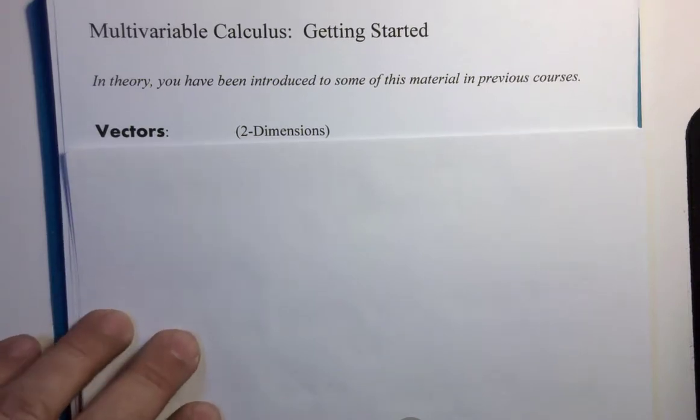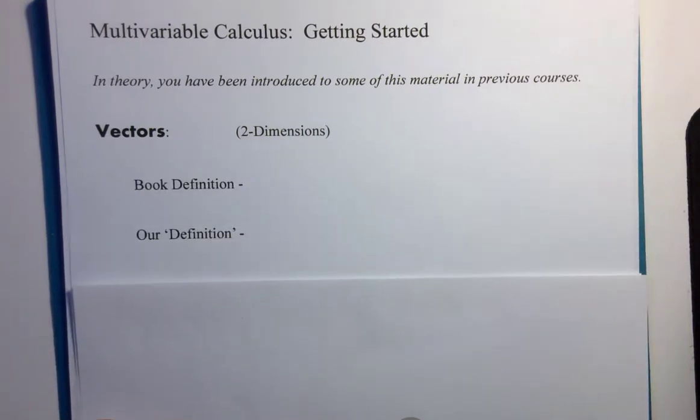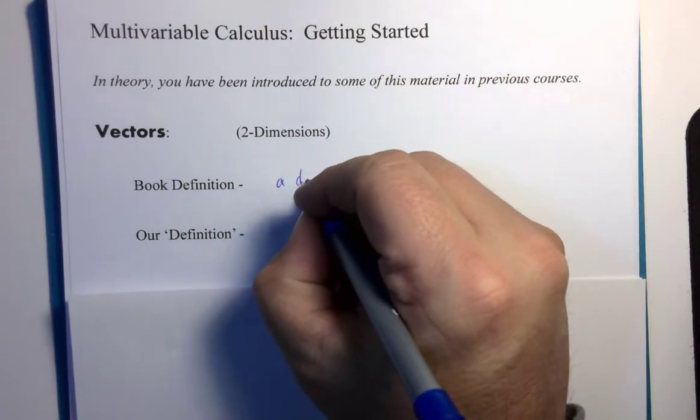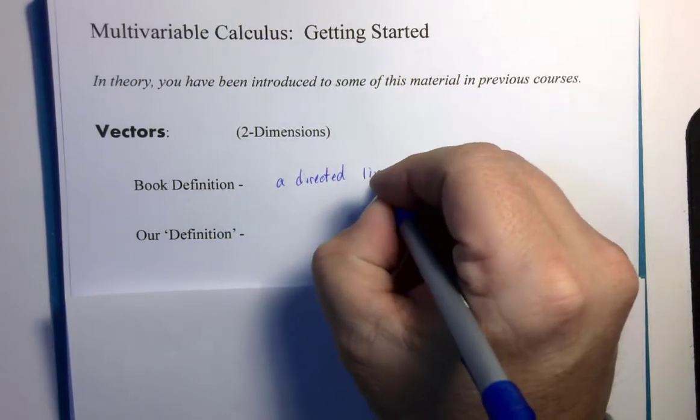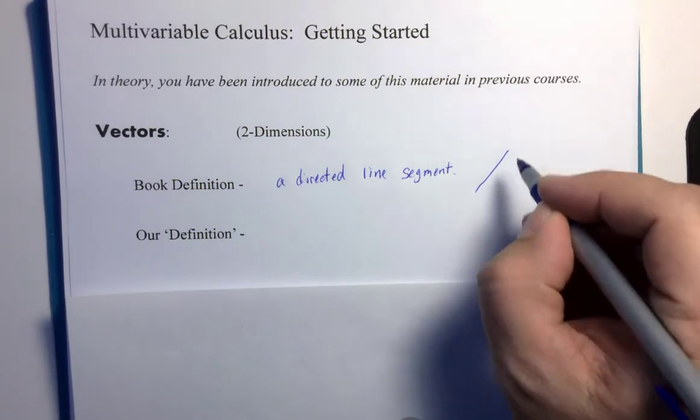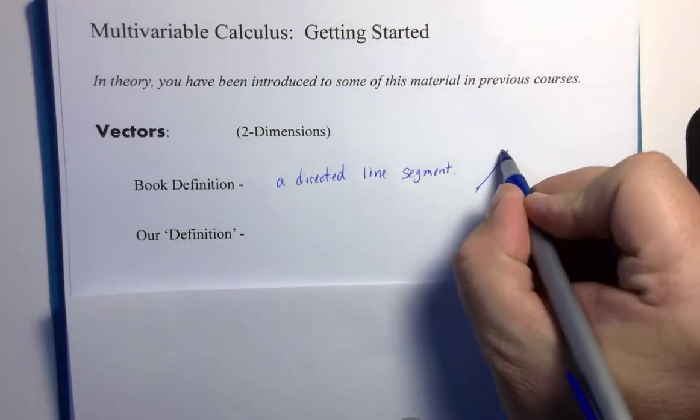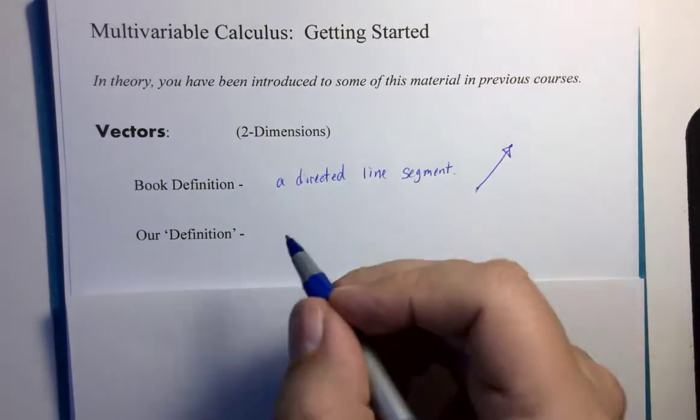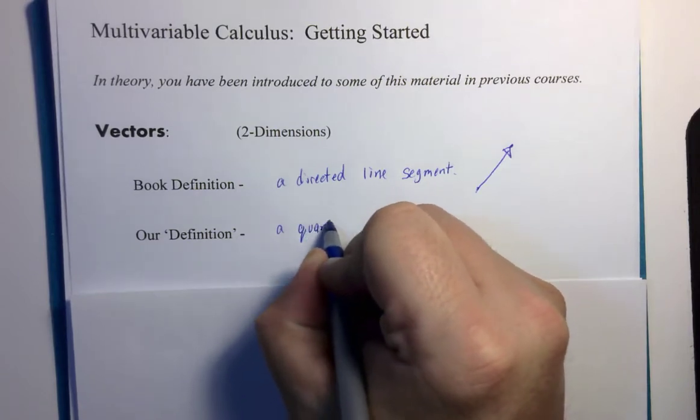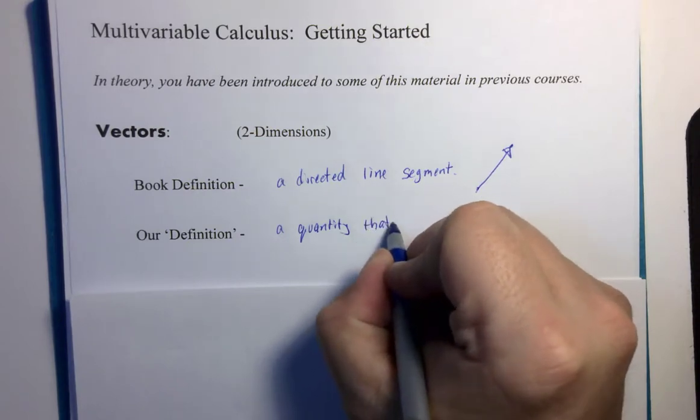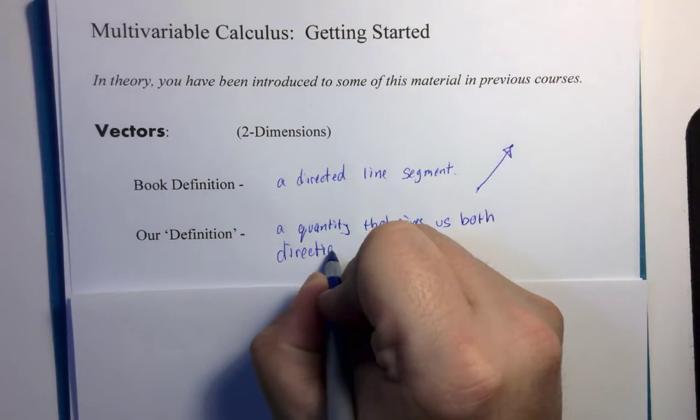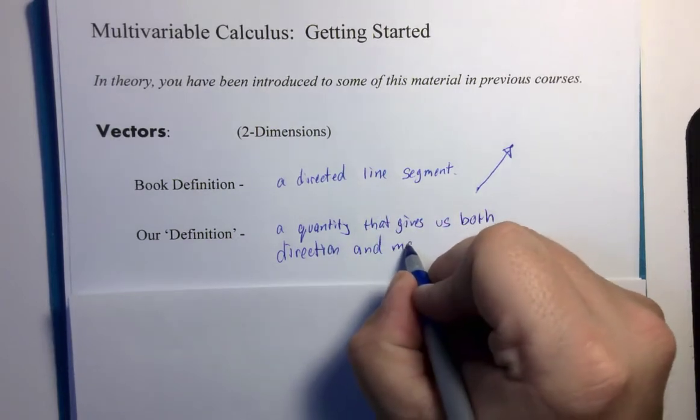So, starting off, let's have two definitions. The particular book I'm using right now would define a vector as a directed line segment. There's a segment because it has a beginning and an end, so let's say it starts here. And there is its direction. We are going to define it this way. Let's say that a vector is a quantity that gives us both direction and what's sometimes called magnitude.